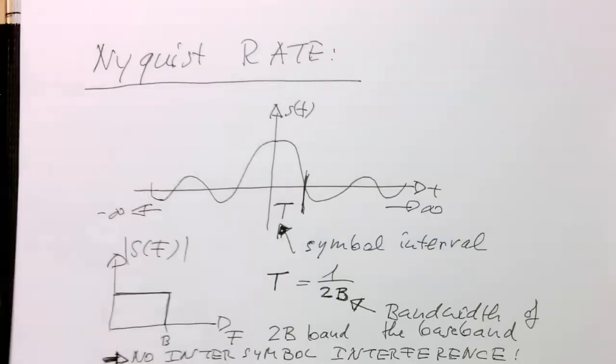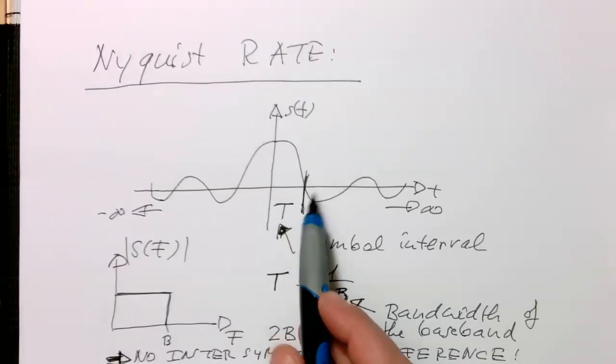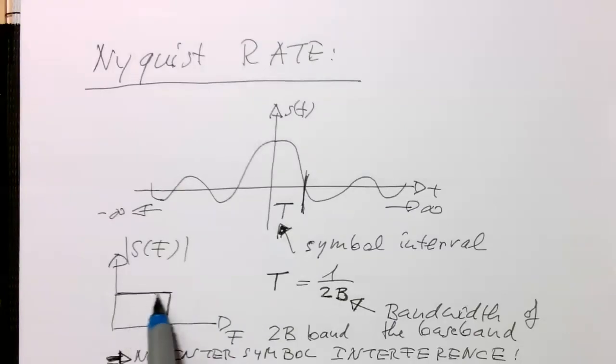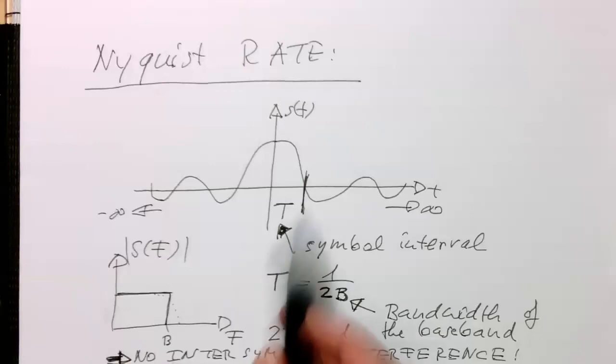And at the same time, obviously we need to still maintain these zero crossings here. We need to modify the bandwidth here to just relax this condition a bit, and it still obeys this sinc-like behavior because we don't get any inter-symbol interference.